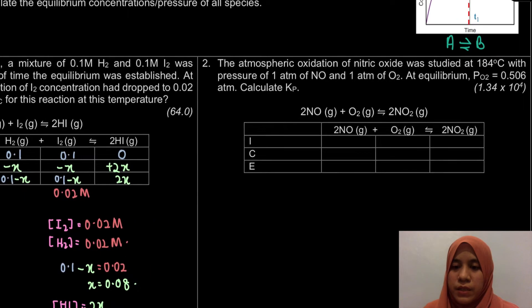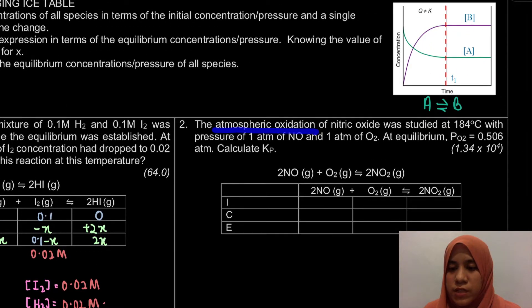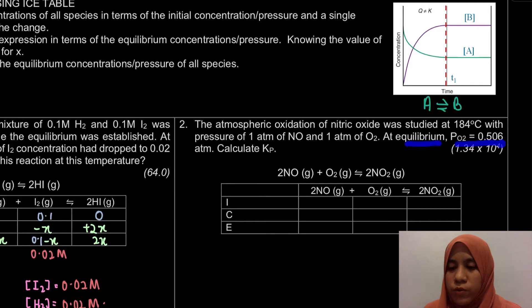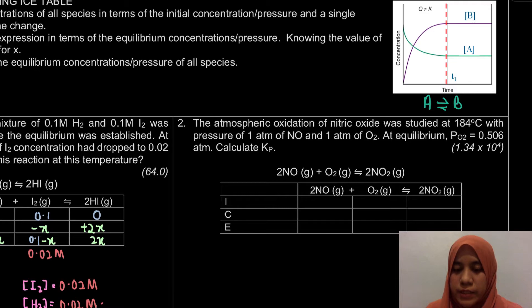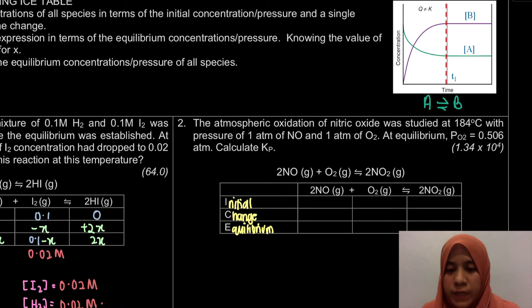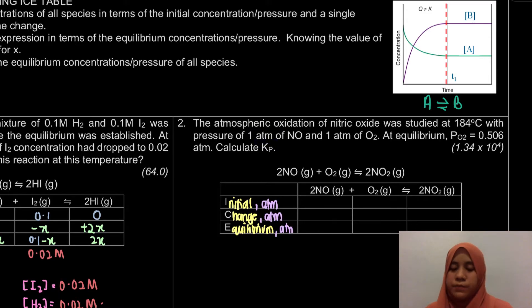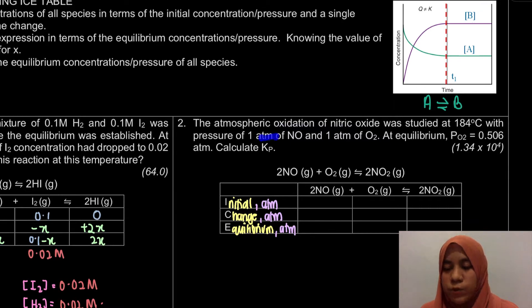Now question 2: the atmospheric oxidation of nitric oxide was studied at 184 degrees Celsius with a pressure of 1 atm NO and 1 atm O2. At equilibrium, the pressure of O2 is 0.506 atm. Calculate KP. We need to write the KP expression. For this case the data is given in atm, so the unit in our ICE table will be atm. At equilibrium, the pressure of O2 is known to be 0.506 atm, but we still need to find KP, so we must set up the ICE table.